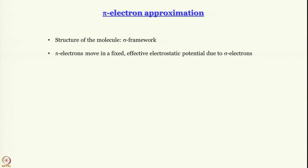Here we have a number of nuclei — it is a poly-nuclear system — if you think of benzene or even ethylene, which we are going to discuss in some detail. We have said that the sigma framework is in place and then only we start discussion about the pi electrons. The pi electrons, when we start talking about them, would experience a joint field of all the nuclei, but that field will be shielded by the sigma electrons that are already present. So the potential that these pi electrons feel is a fixed effective electrostatic potential.